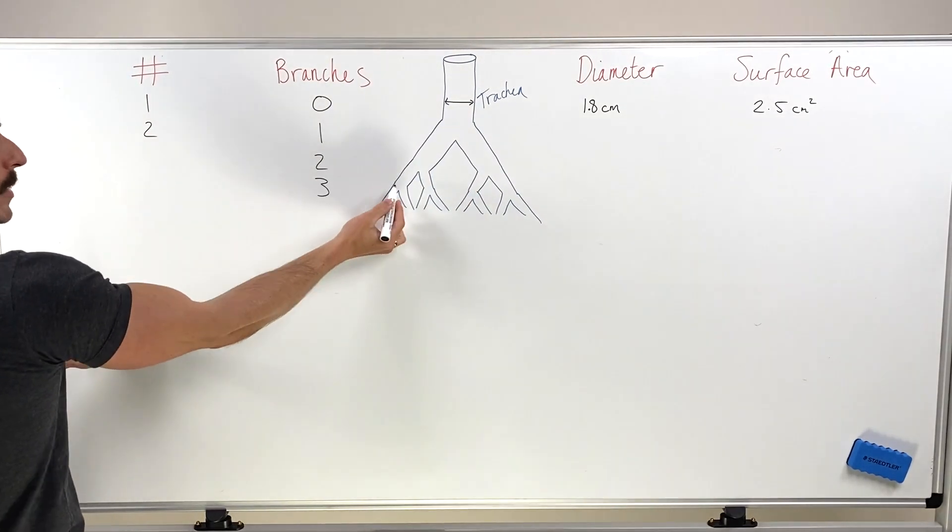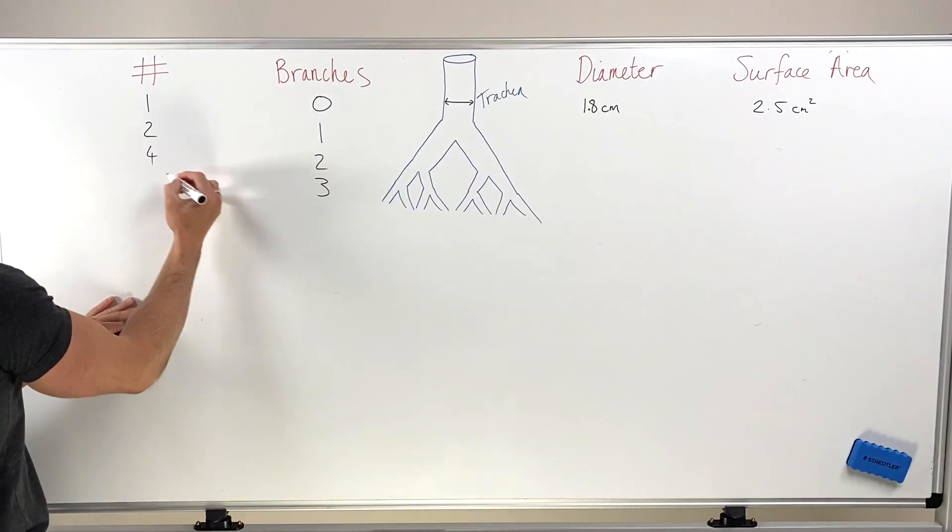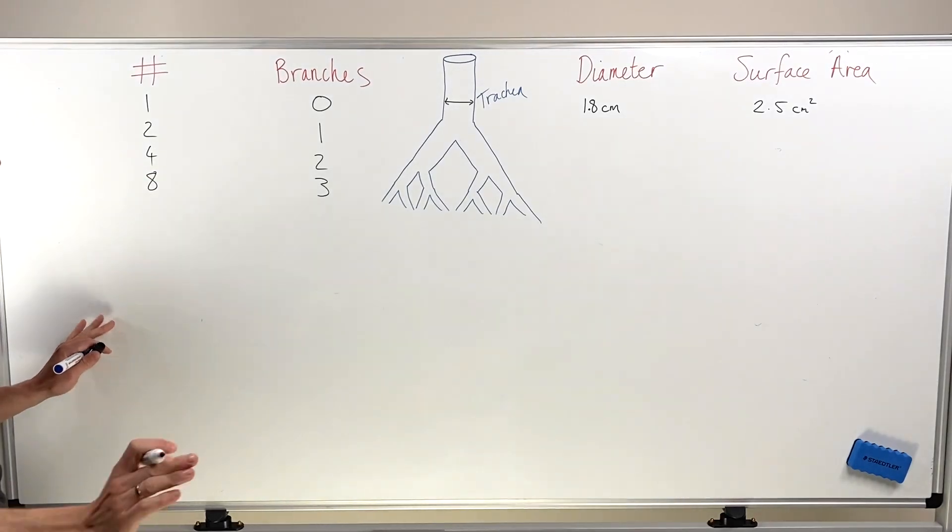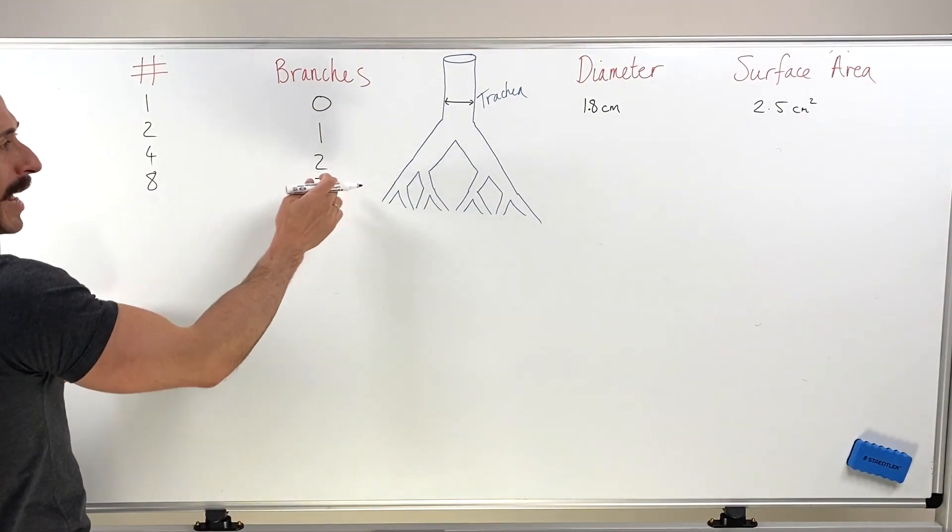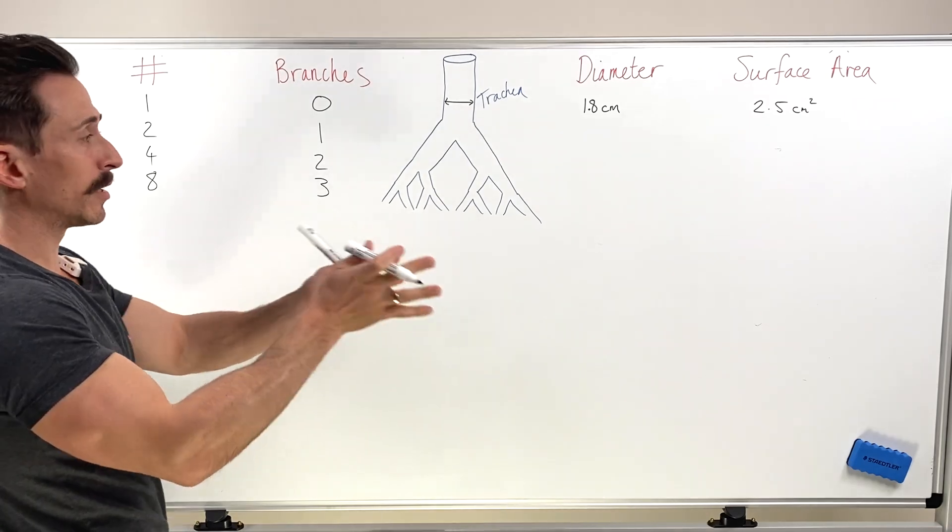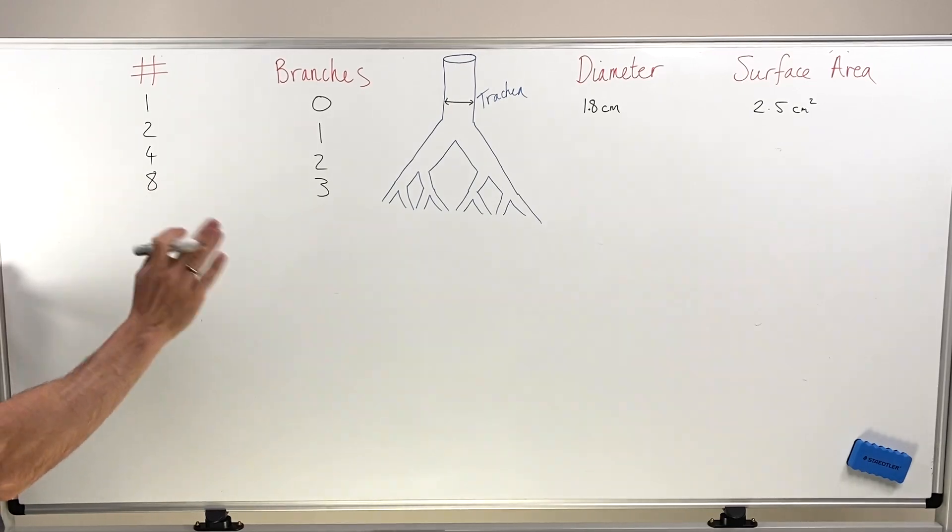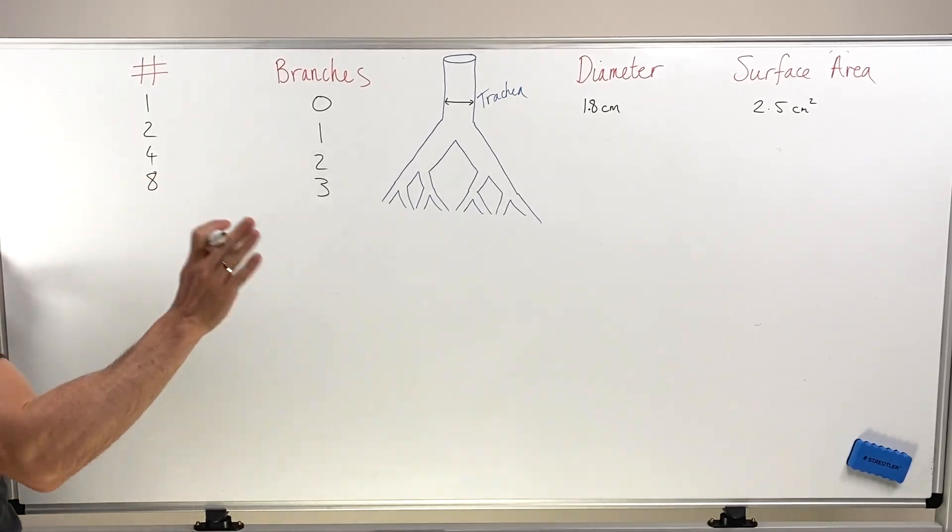The next split creates one, two, three, four branches. And the next split creates one, two, three, four, five, six, seven, eight branches. So every time it has a branching that occurs, it doubles the amount of branches it produces. That's important. That's exponential. That's important as we move through.